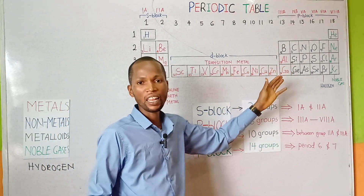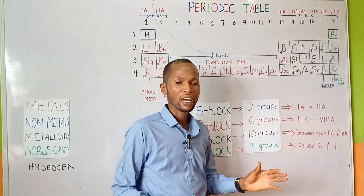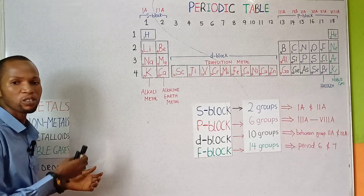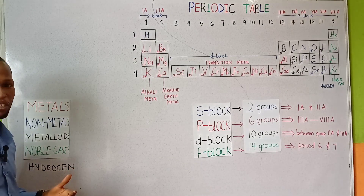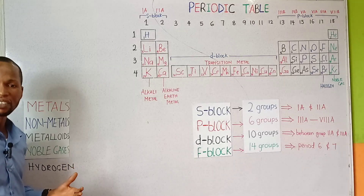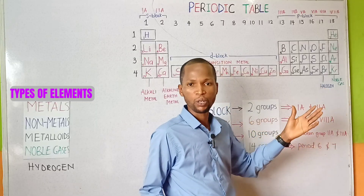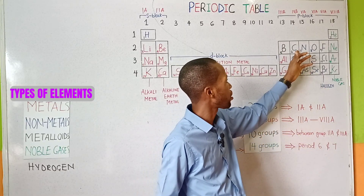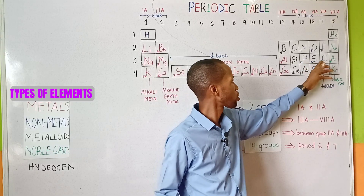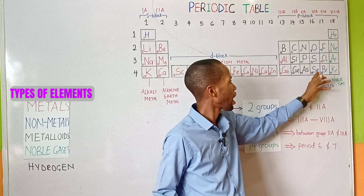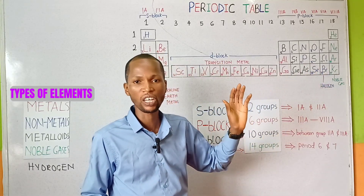Nonmetals are elements with high electron affinity and ionize by gaining electrons to form negatively charged ions. The nonmetals include carbon, nitrogen, oxygen, fluorine, phosphorus, sulfur, and selenium, including boron — they are nonmetals.